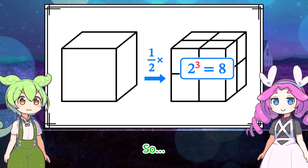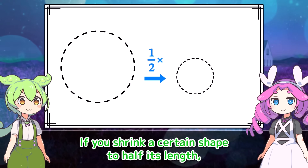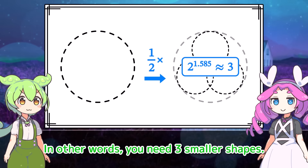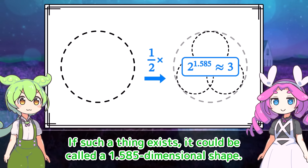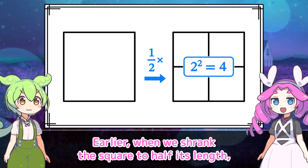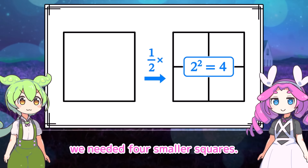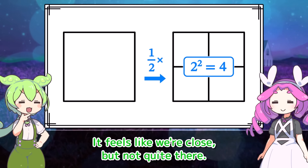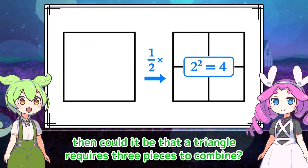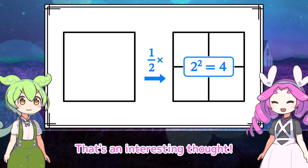So if you shrink a certain shape to half its length, and it takes 2 to the 1.585 — in other words, three — smaller shapes to restore the original, then it could be called a 1.585 dimensional shape. But does such a shape really exist? We're getting much closer to the answer. Earlier when we shrank the square to half its length, we needed four smaller squares — not three, but four. If a square requires four pieces, could it be that a triangle requires three pieces to combine?